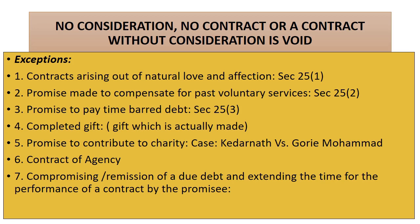Point number seven: compromising or remission of a due debt, and extending the time for performance of a contract by the promisee. If there is an agreement between a debtor and creditor where the creditor gives an extension of time for the repayment of the loan, in such a case also there is no movement of consideration by one of the parties, but it is a valid contract.